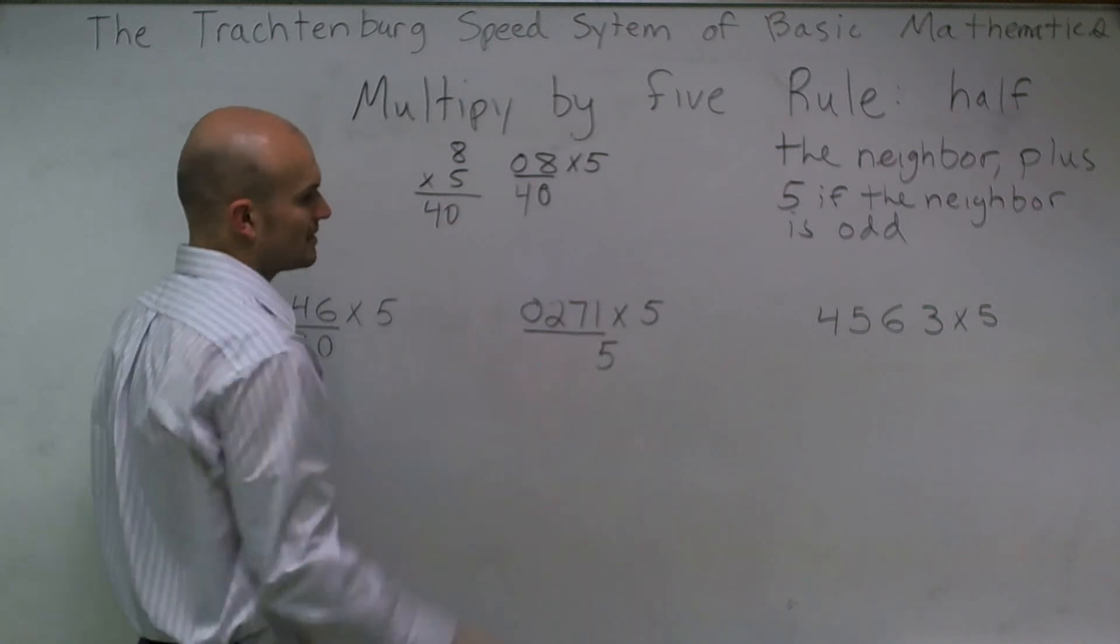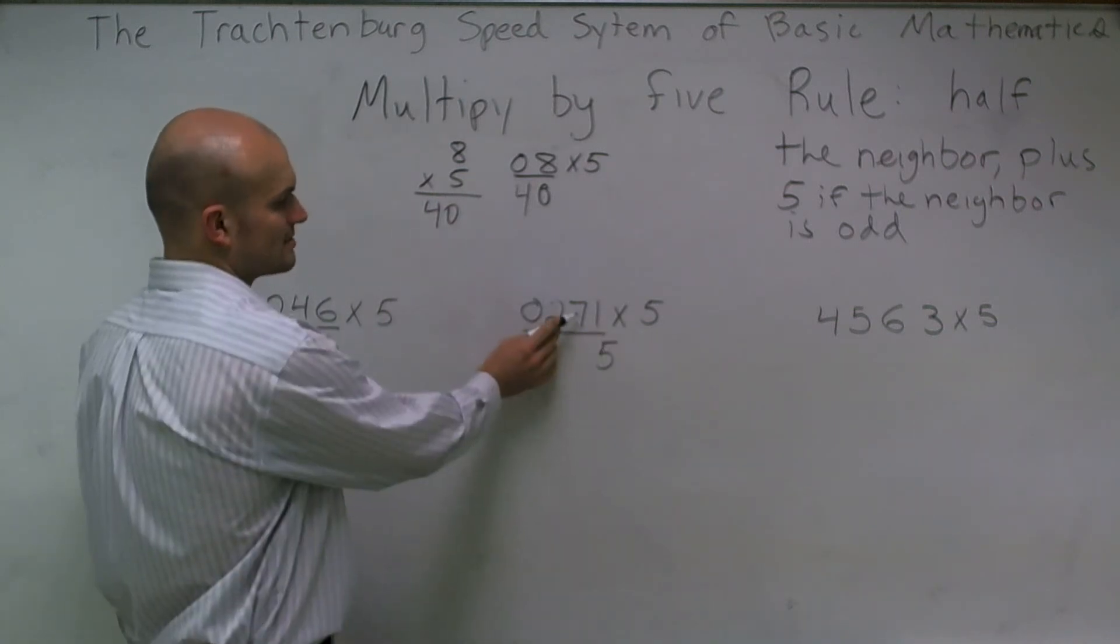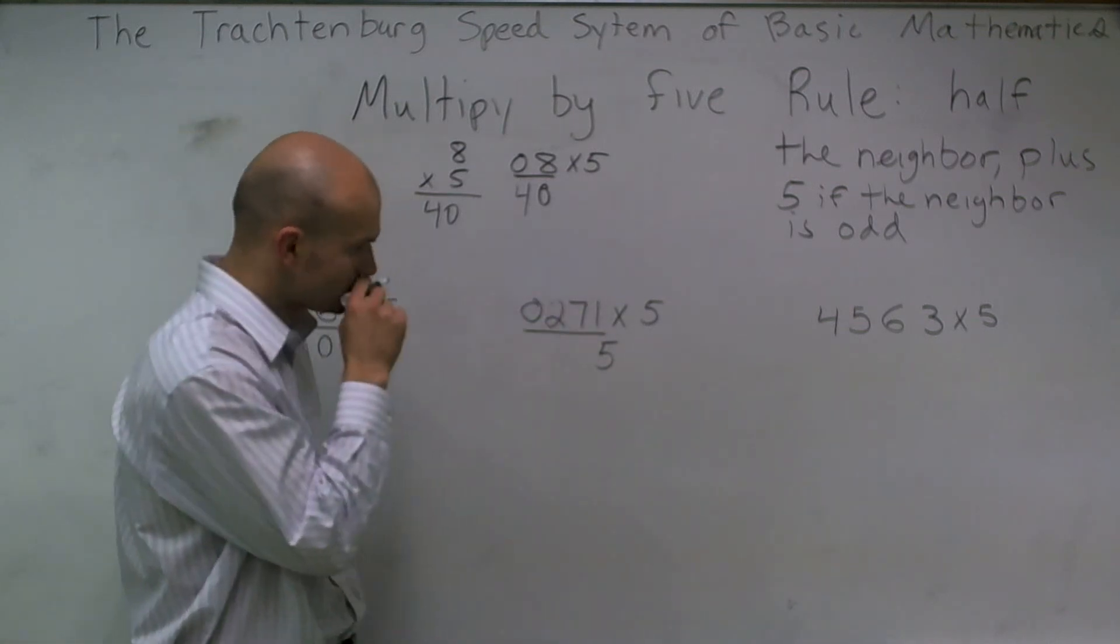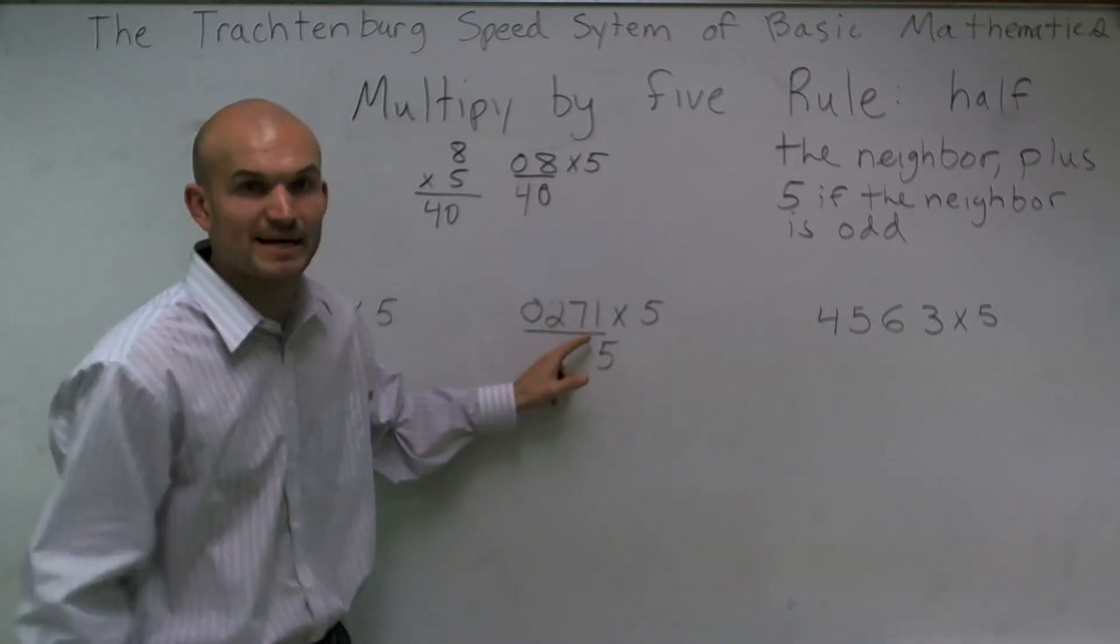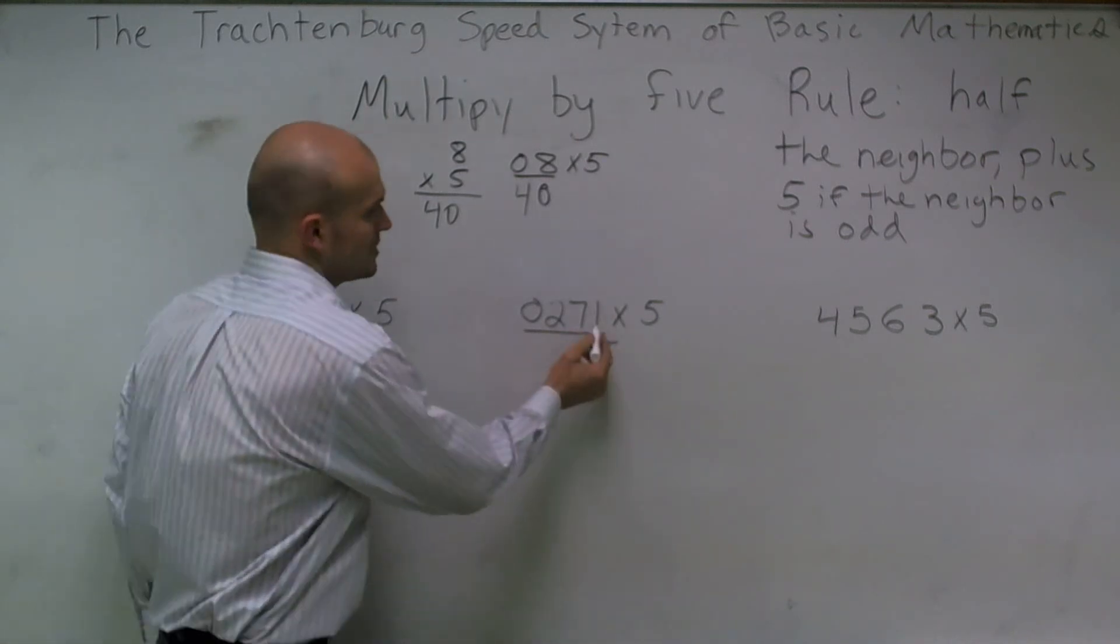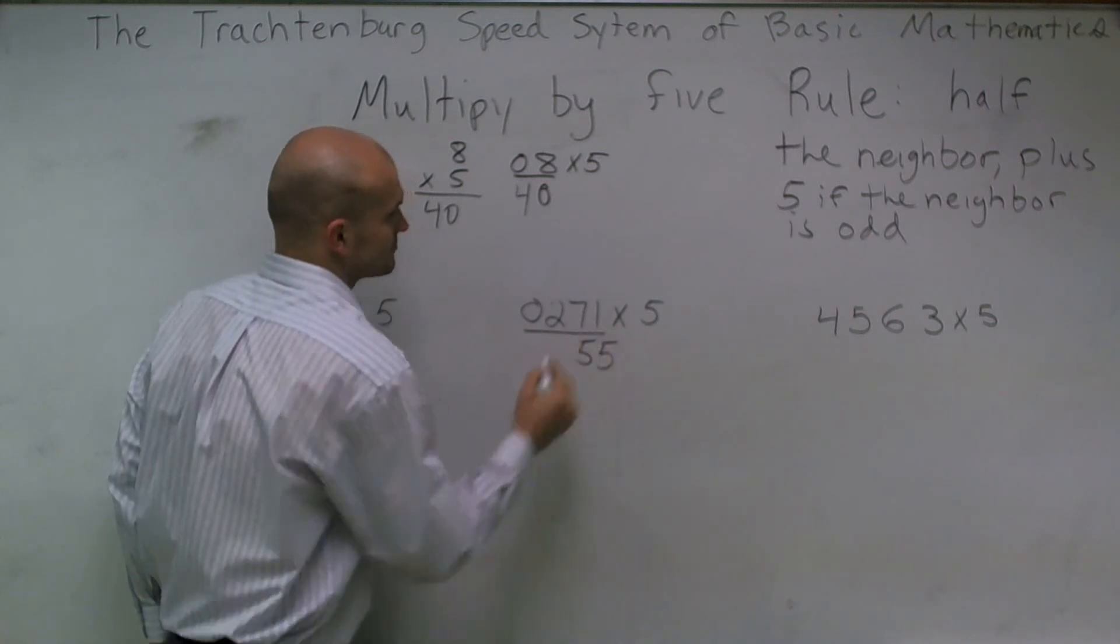Then the next thing is I look at 7. So I'm going to take half of my neighbor, which would be 0. But then again, since this is odd, I'm going to add 5. So 0 plus 5 is 5.